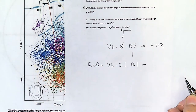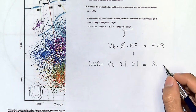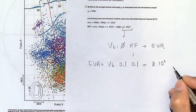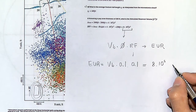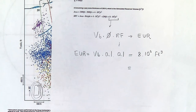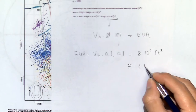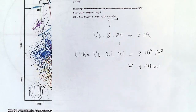That comes out to about 8 million cubic feet, and converting to barrels — since one barrel is roughly 5.6 cubic feet — we're talking about roughly one million barrels as the EUR for this completion job.